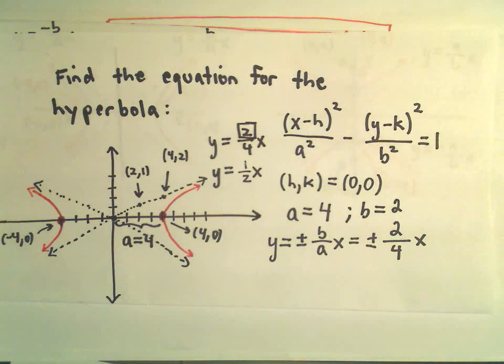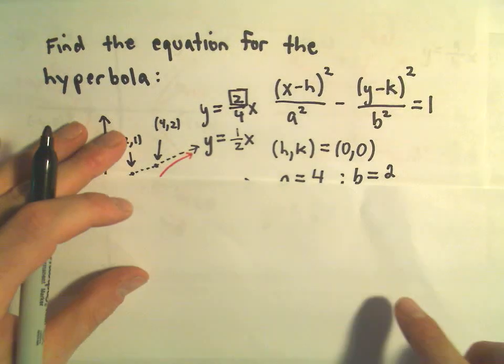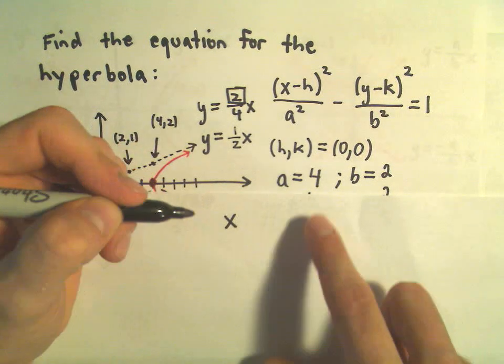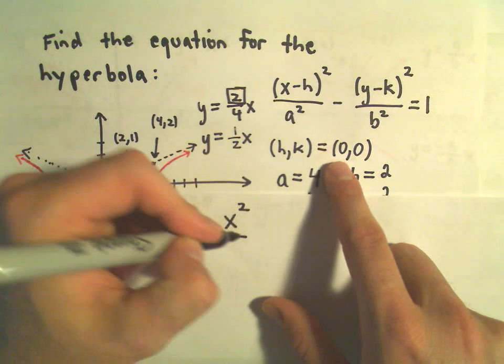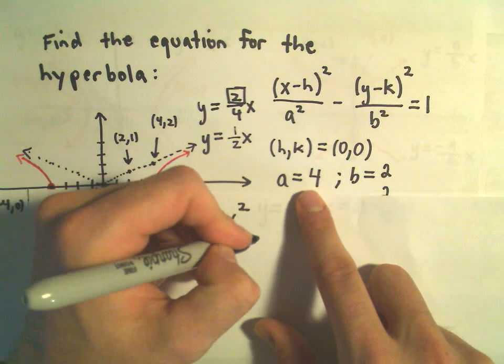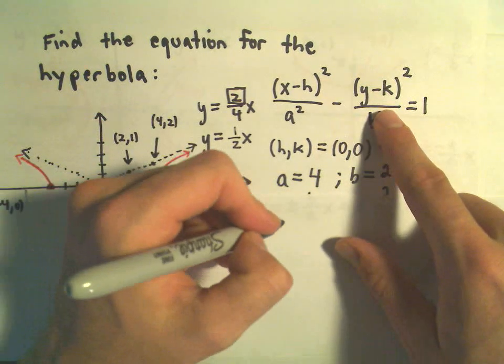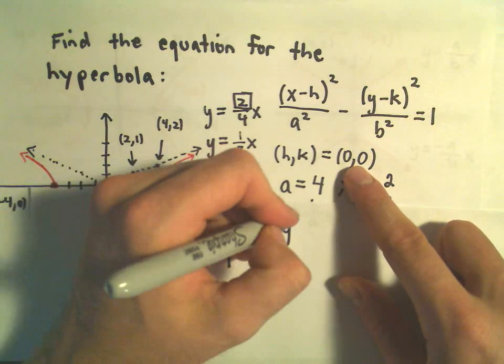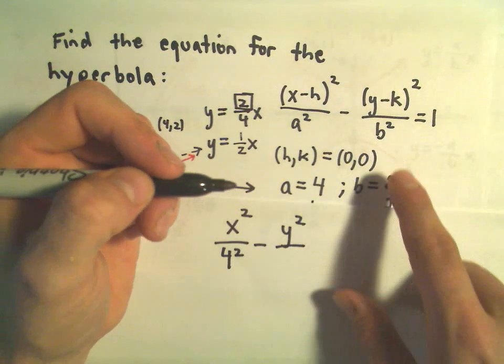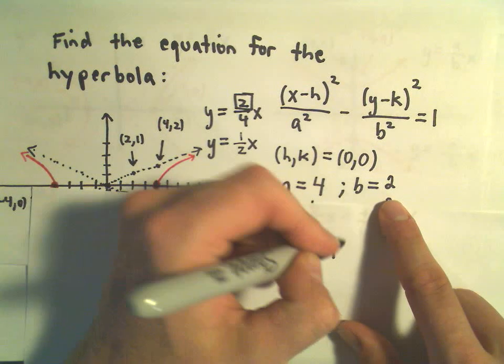And now we've got everything we need to fill in the equation for our hyperbola. So it says we'll have x minus 0 squared over a squared minus y minus 0 squared over b squared, which is 2 squared, equals 1.